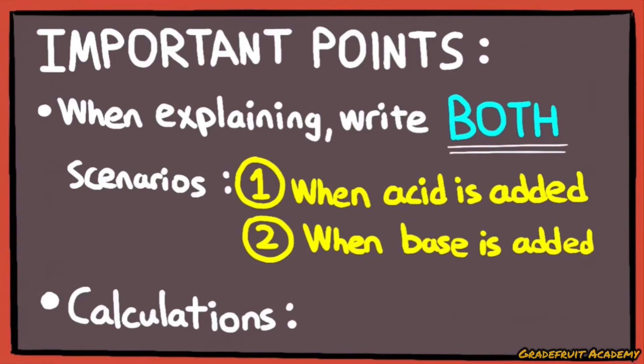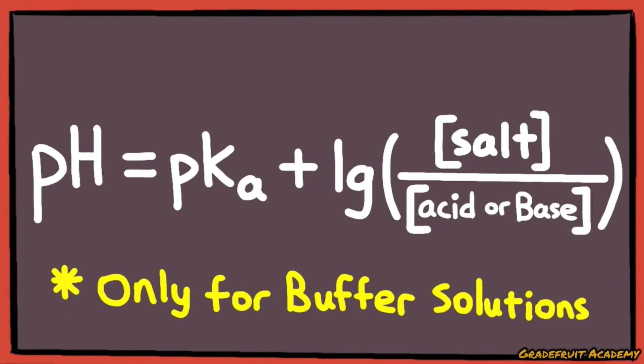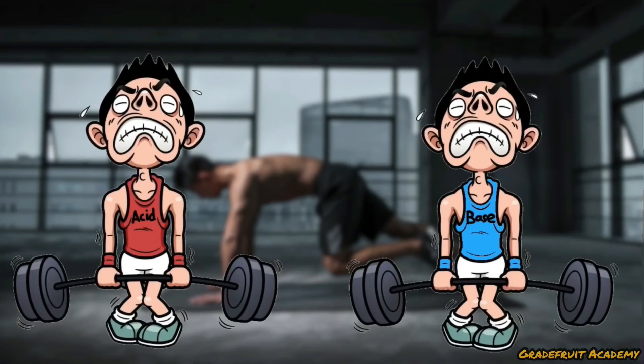This is to show that the buffer can buffer against any substance regardless if it's acidic or alkaline to maintain the pH of a solution. Number 2, you must know how to calculate the pH of buffer solutions using the Henderson-Hasselbalch equation. And take note, this equation only applies to buffer solutions. So don't use this equation on expressions like finding out the pH of a weak base.